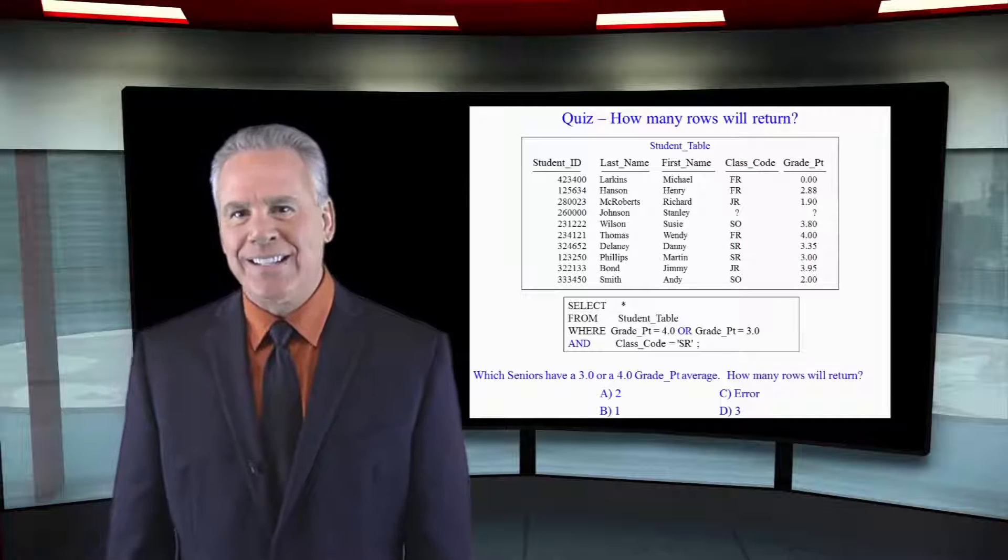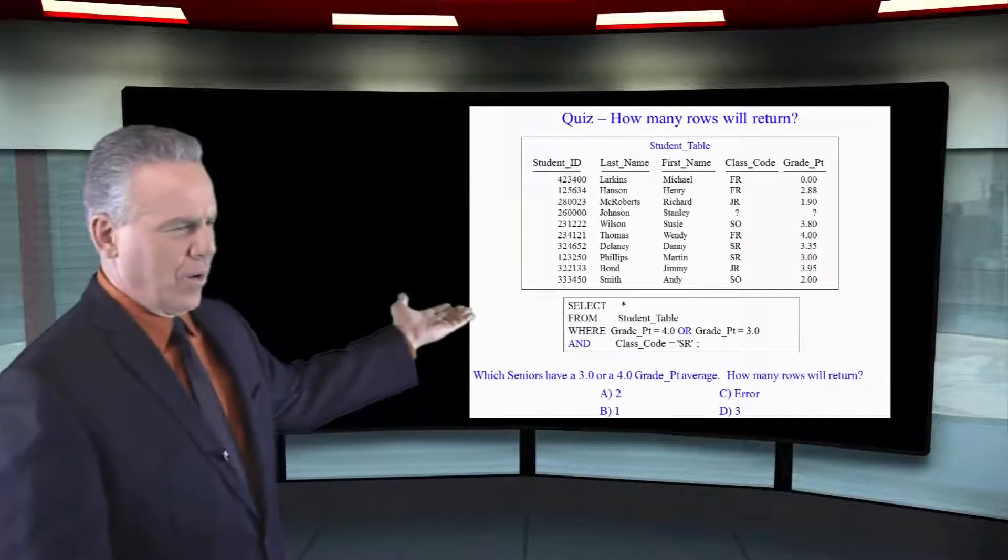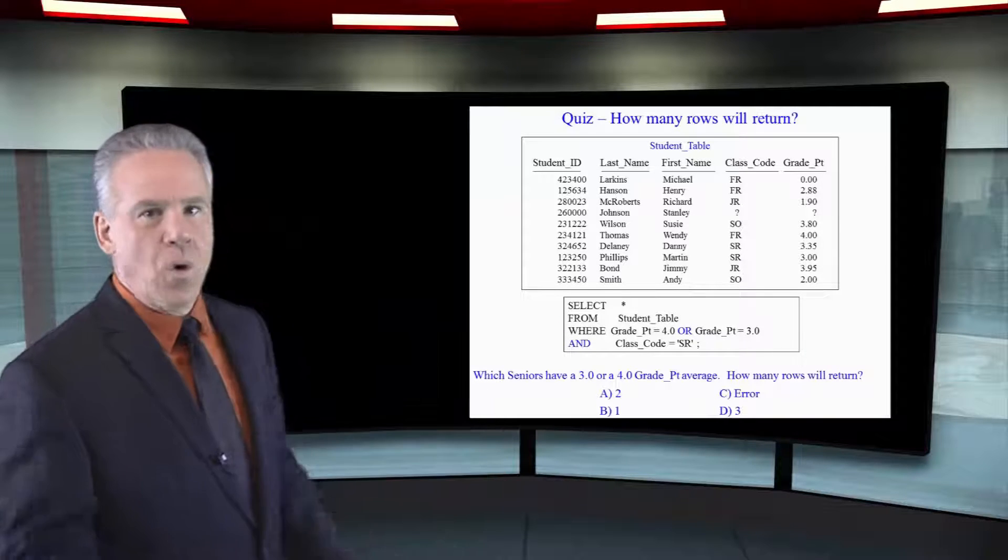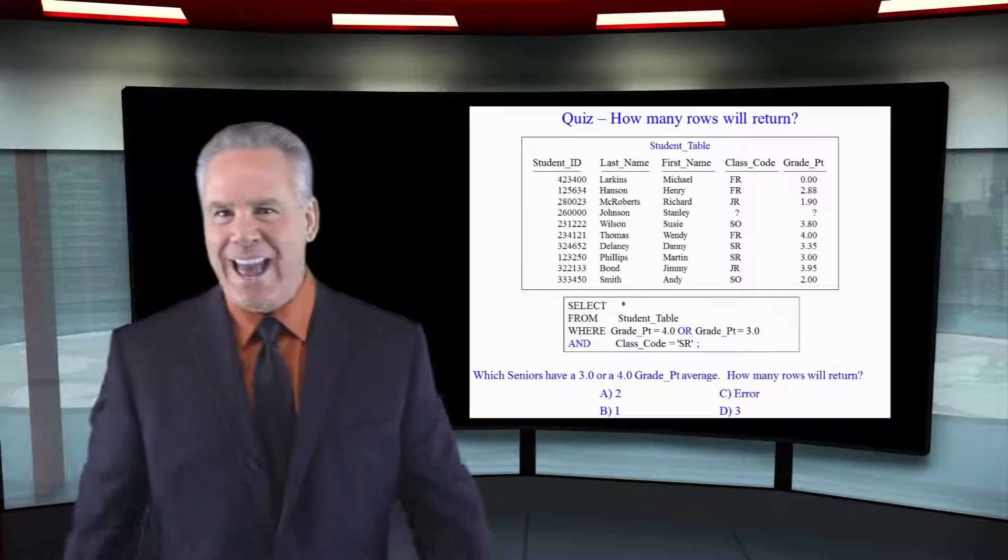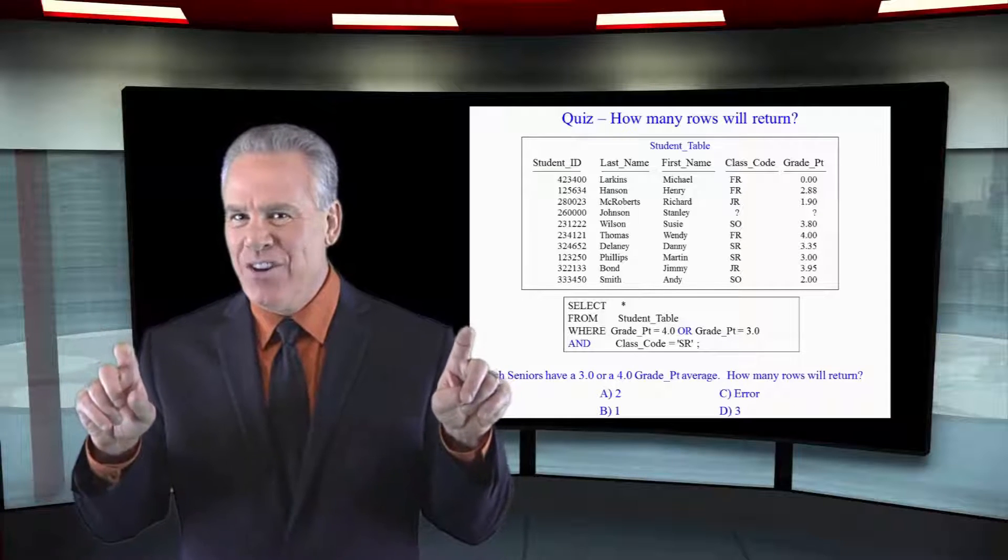Now I want you to look at this example where grade point equals 4.0 or grade point equals 3.0 and class code equals senior.